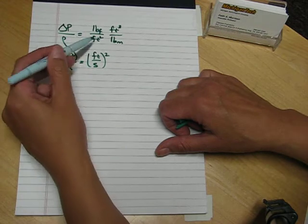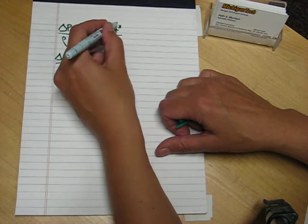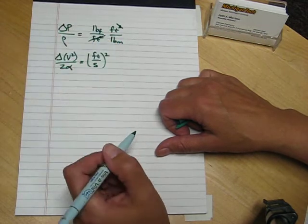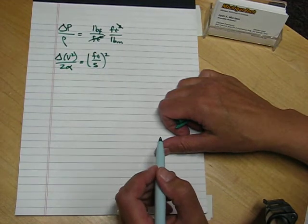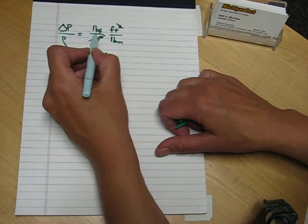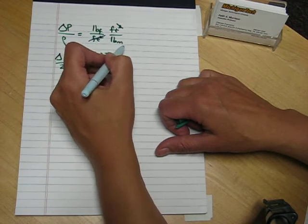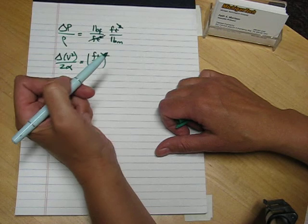These don't appear to be the same units, foot pound force per pound mass versus foot squared per second squared. And the reason is this is a force unit divided by a mass unit, and we need to resolve these.